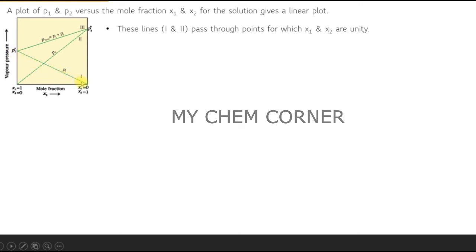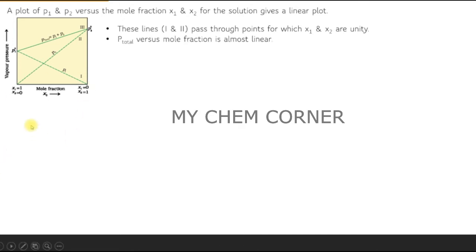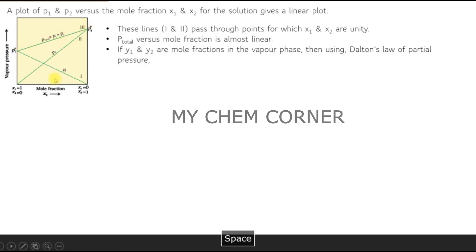p1 passes through where x2 equals one, and p2 passes through where x1 equals one — that is why in the equation p1 is associated with x2. The p-total versus mole fraction relationship is almost linear — slightly slanted, but can be considered approximately linear.